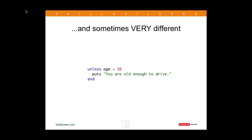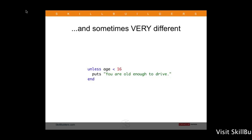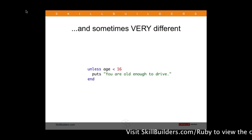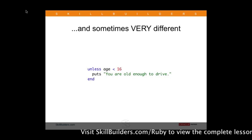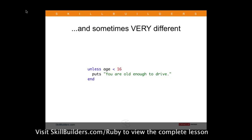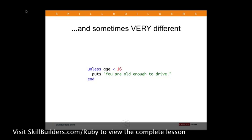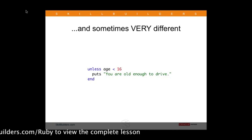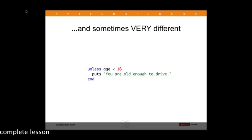Sometimes things can be very different in Ruby. If you ever have the need to do 'if not', there's a keyword called 'unless' that performs the same feature, and it can also be used as a predicate on the end of a statement. So you can say, 'redirect to the home page unless the current user is an admin.' The advantage is that the way you would express that in your language is the same way you express it when you write the code.